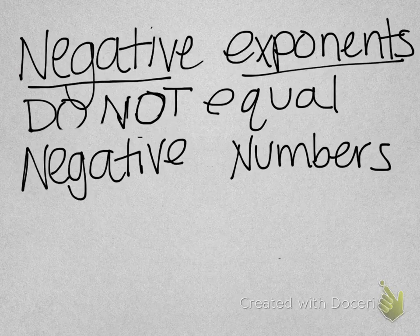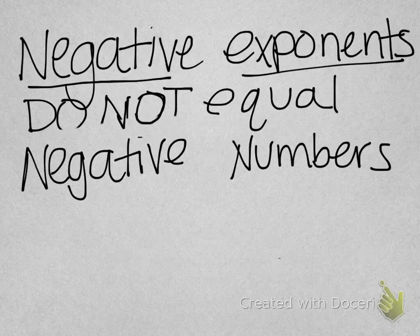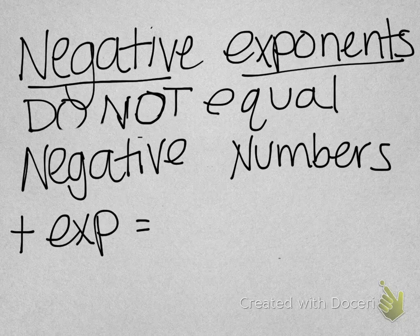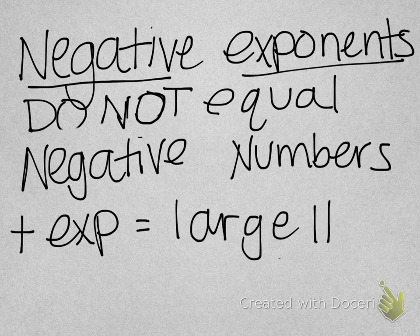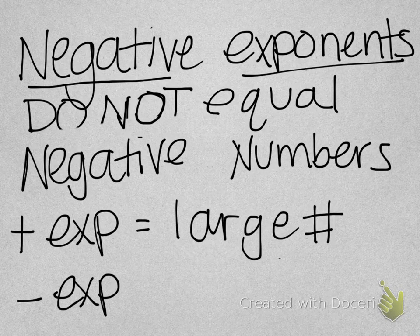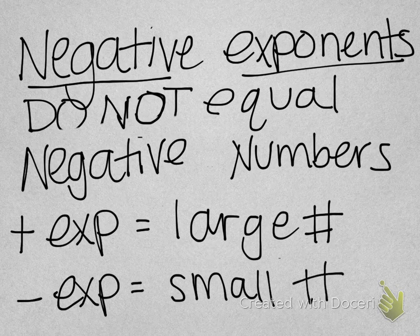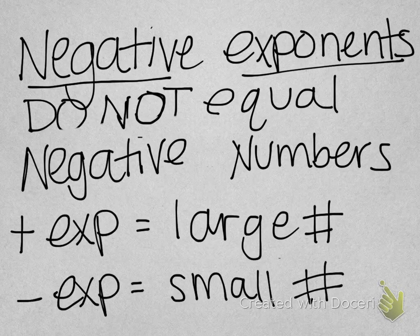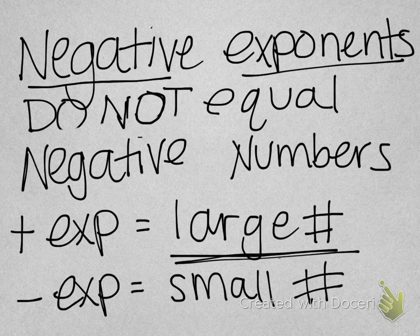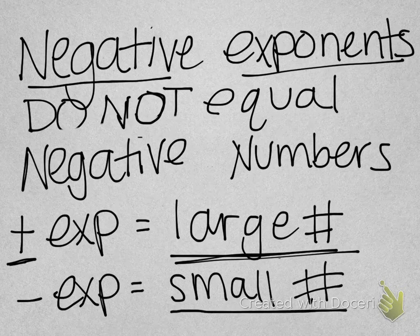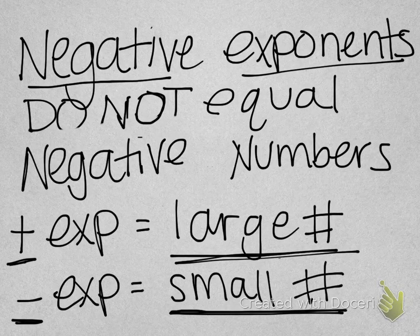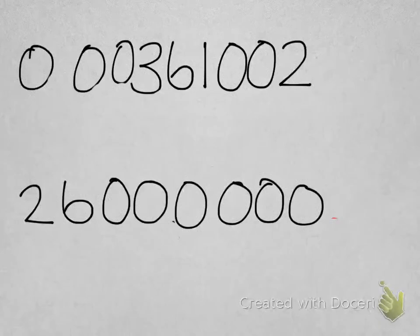Negative exponents do not mean a negative number — don't confuse those two things. A positive exponent equals a large number; those first two examples had positive exponents and were very large numbers. A negative exponent equals a small number. A memory trick: if you got a check for a large amount you'd have a positive attitude; for a small amount, a negative attitude.